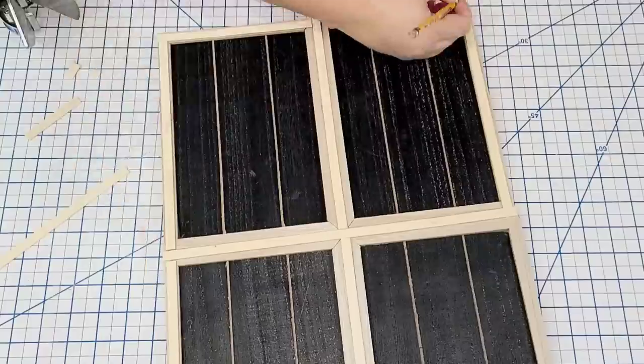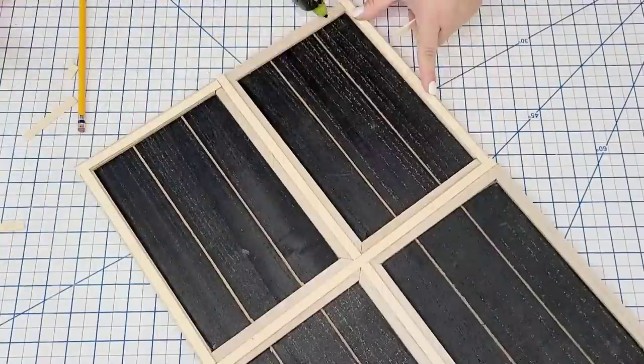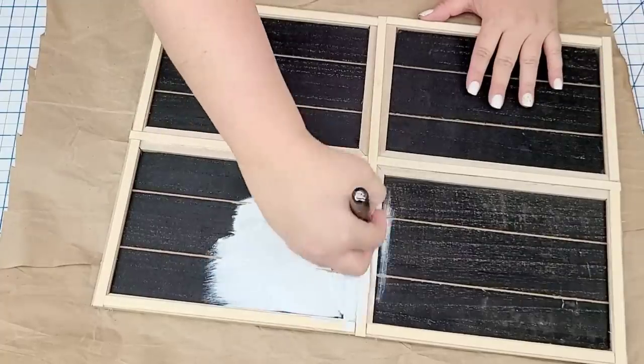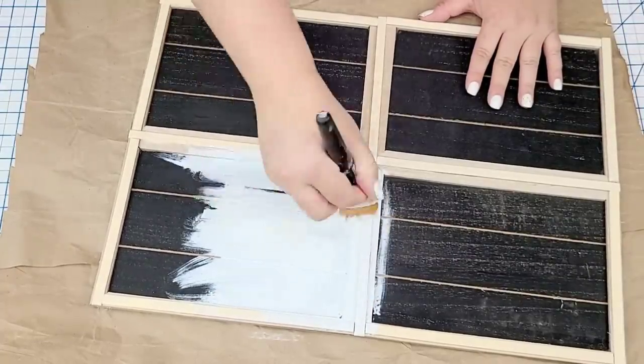Then I decided to just go ahead and trim the whole thing because it just added this cute little touch and it kind of brought everything together. Once I had the window completely built, I'm going to give it two coats of Waverly chalk paint in the white.